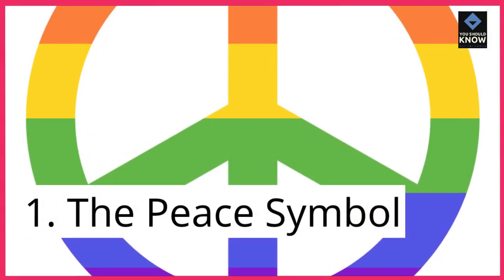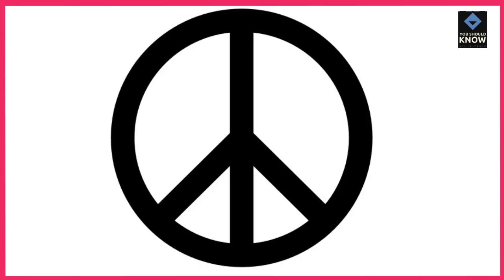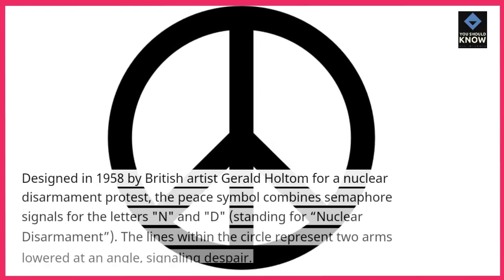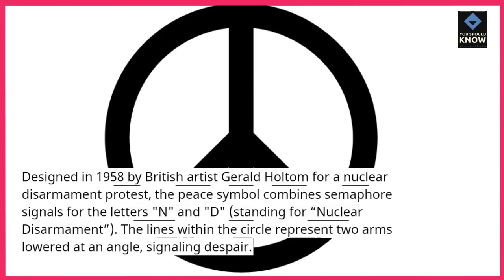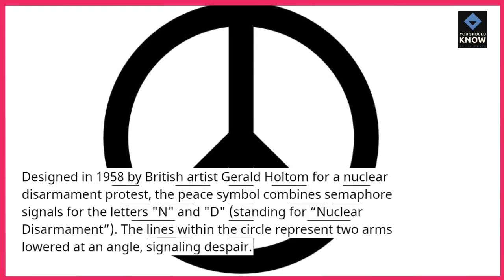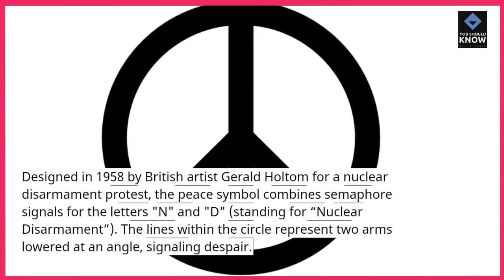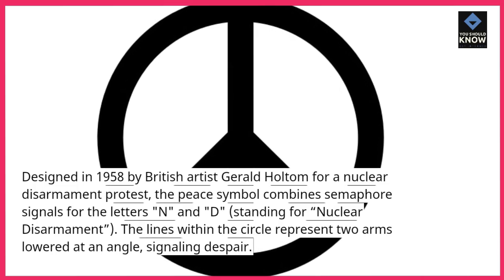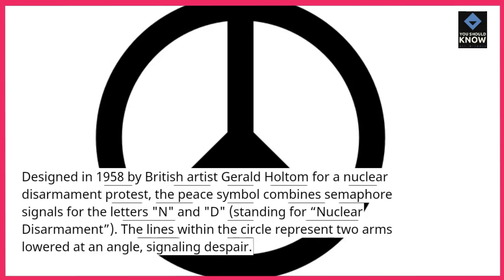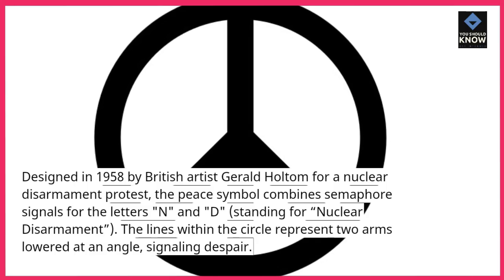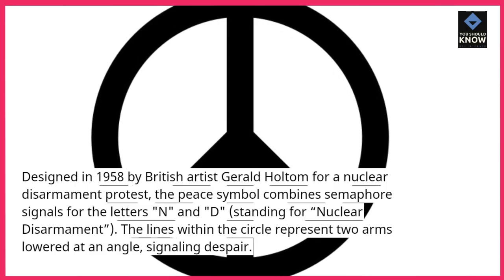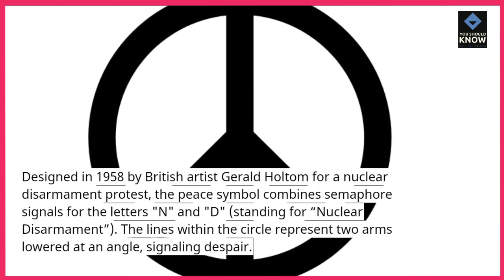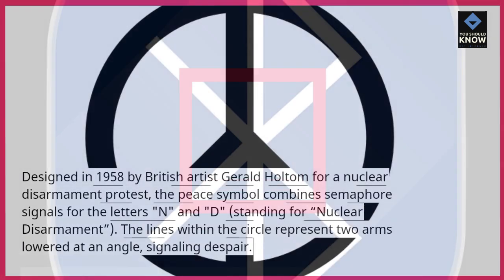1. The peace symbol. Designed in 1958 by British artist Gerald Holtham for a nuclear disarmament protest, the peace symbol combined semaphore signals for the letters N and D, standing for nuclear disarmament. The lines within the circle represent two arms lowered at an angle, signaling despair.